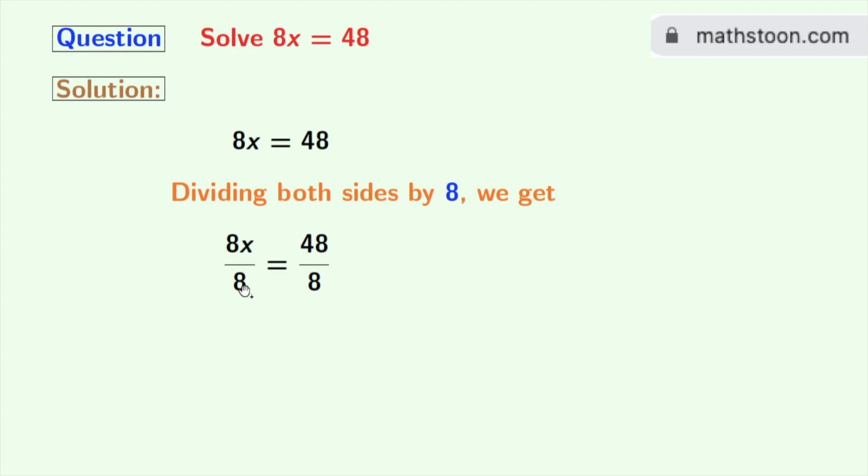In the left hand side, 8 gets cancelled and we are left with x. And in the right hand side we will write 48 as 8 times 6, and the denominator 8 remains the same.